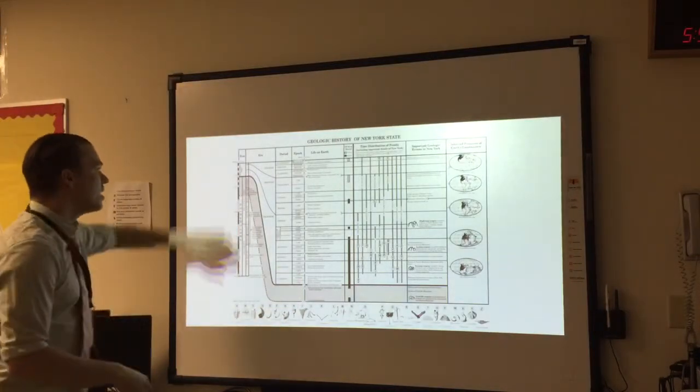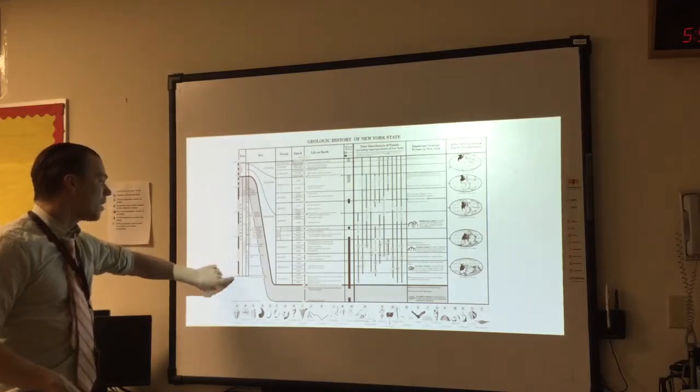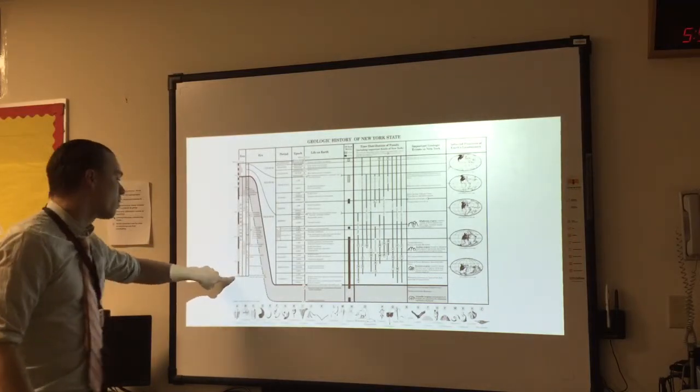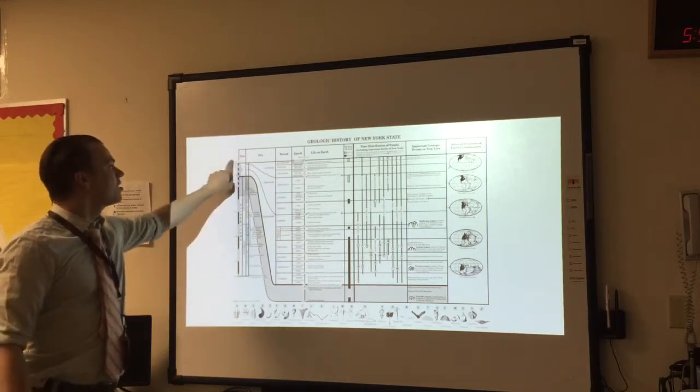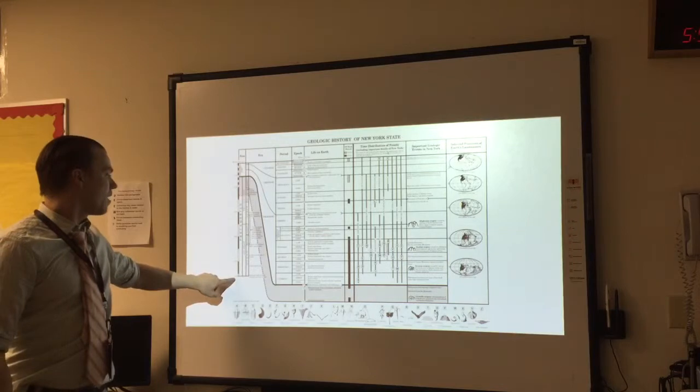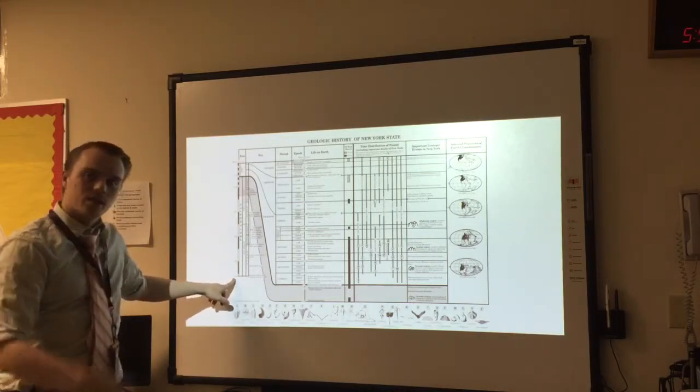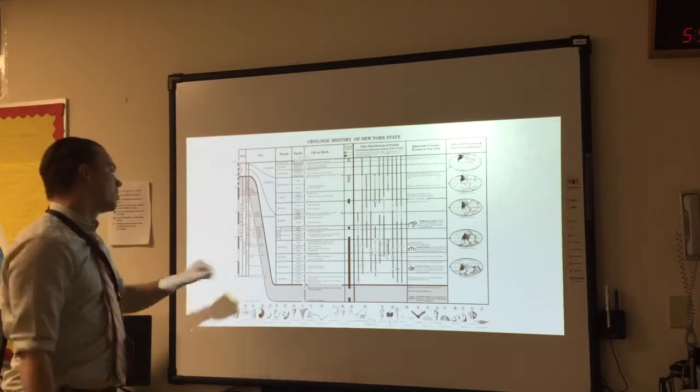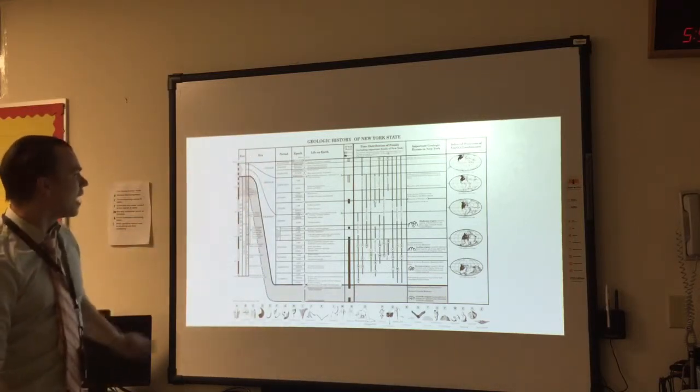This is where you're gonna find it. So eons are really, really long amounts of times. They go all the way back to the formation of the Earth, which was 4.6 billion years ago. In this case, this is in millions of years—their scale—so they made it 4,600 million years. That's a really complicated way of saying 4.6 billion years ago.